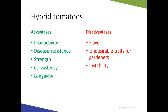Hybrid tomatoes offer advantages in productivity — they generally grow better and produce more. Many have been bred for disease resistance, so there's often more disease resistance available in hybrid types. They tend to do better under less-than-ideal conditions and provide more consistency — a more predictable size and color with less variation within those plants.